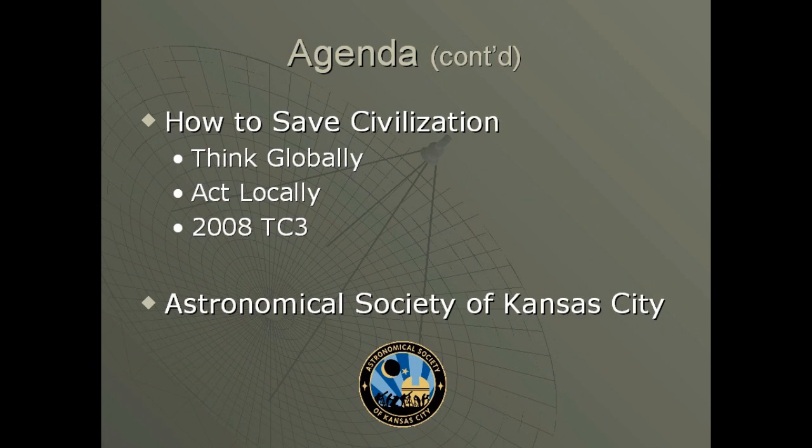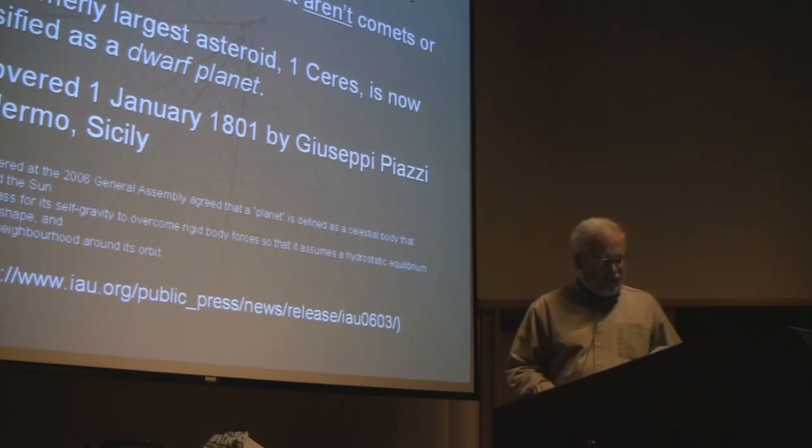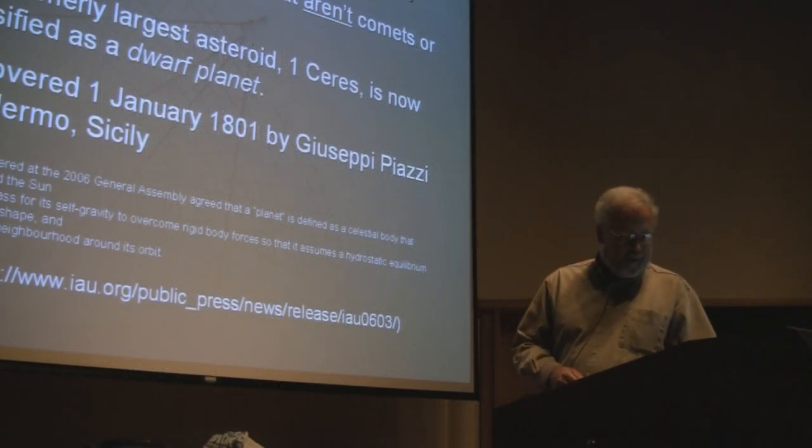Okay, so the basics. What are asteroids? Well, it's any small solar system body that isn't a comet or a meteoroid. The formerly largest asteroid, number one Ceres, is now actually classified as a dwarf planet. It was discovered on the very first night of the 19th century from the middle of Palermo, Sicily, which is a fairly large city now, but they didn't have to worry about light pollution back then.